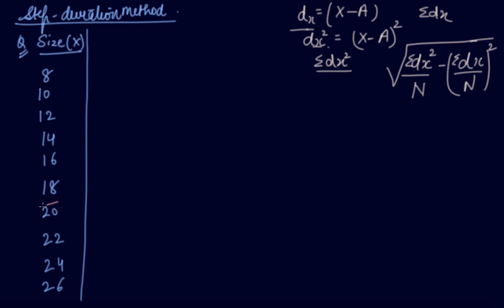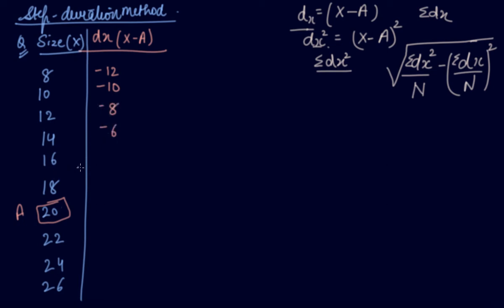I am taking assumed mean as 20 because it is easy to subtract from a number ending in zero. Taking deviations x minus 20: 8 − 20 = −12, 10 − 20 = −10, 12 − 20 = −8, 14 − 20 = −6, 16 − 20 = −4, 18 − 20 = −2, 20 − 20 = 0, then 2, 4, and 6. Summing all gives Σdx = −30.